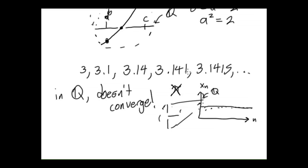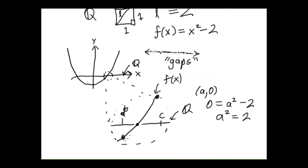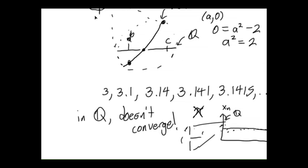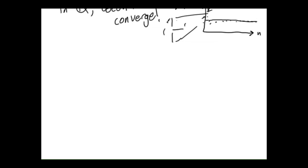The non-existence of limits that we know should exist, the failure of very familiar assertions like the intermediate value theorem, and the inability to do basic Euclidean geometry should have made you fairly suspicious of our ability to work with Q. We should all feel pretty good about saying no to Q — it's just not good enough for what we want to do, especially in analysis.